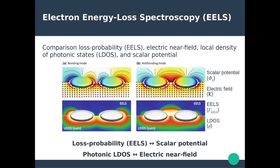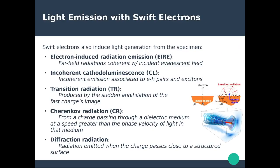Another type of process that can be important when high-energy electron beams interact with matter is light emission. Light emission processes from electrons can take various forms — from electron-induced radiation emission, which are far-field radiations coherent with the incident evanescent field from the electrons, to incoherent light emission called cathodoluminescence, which comes from electron-hole pairs recombining in the material after excitation by high-velocity electrons. That's what we're going to discuss now.